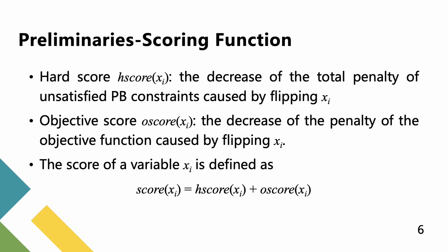As a core guidance for the search process, scoring functions play an important role in local search algorithms, which measure the benefits of a candidate variable. For boolean variable xi, the hard score and the objective score are the decrease of the total penalty of unsatisfied PB constraints and the objective function caused by flipping xi. The score of a variable xi is defined accordingly.